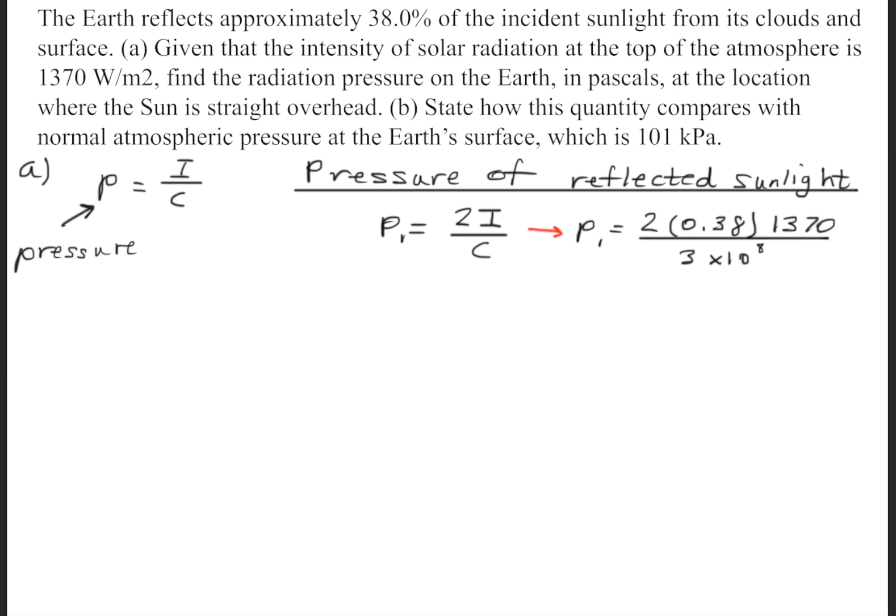Now we'll take into account that only 38% of this gets reflected, so we'll have 2 times 0.38 times 1370, and we'll divide that by the speed of light in a vacuum, which is 3 times 10 to the 8th meters per second. This will give us a pressure of 3.47 times 10 to the minus 6 pascals.